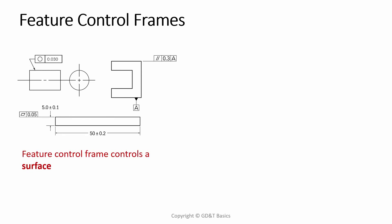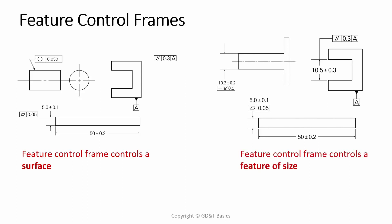Just like straightness, whether you're calling flatness on a feature of size or a surface depends on your feature control frame placement. When you place it on the surface itself, you're controlling the surface. This means that you have a leader arrow pointing directly to the surface or an extension line coming off of it. For a feature of size, your control frame is either pointing to the actual dimension arrows, or you're placing it with the specific size dimension of the feature of size that you're controlling.